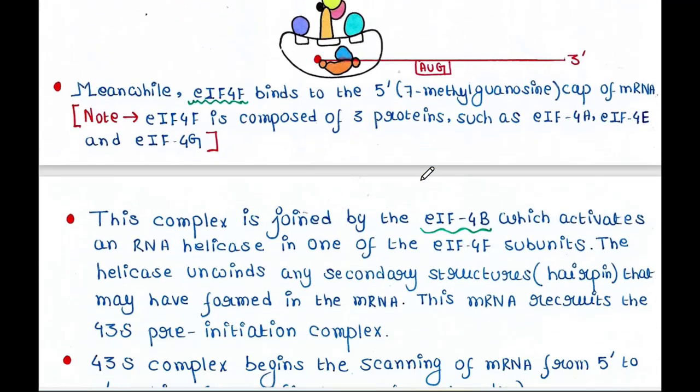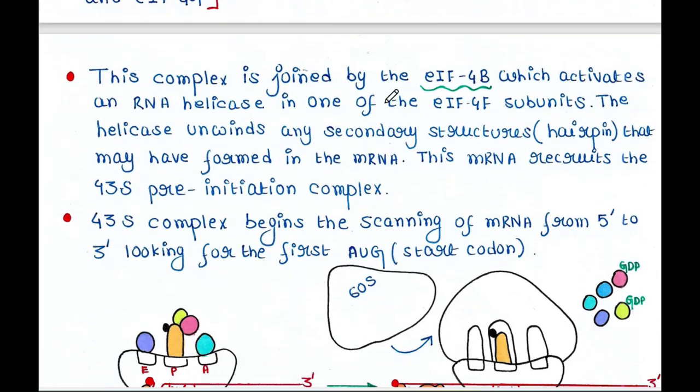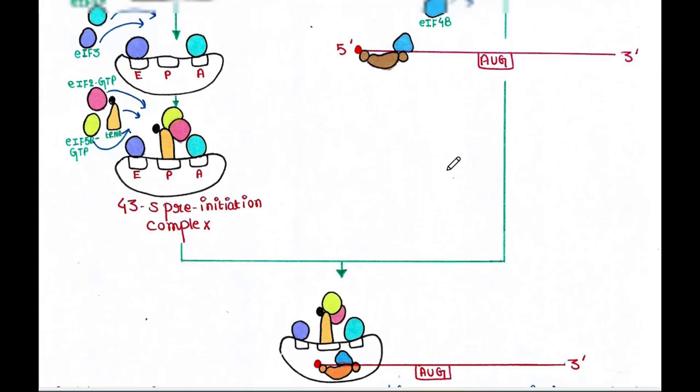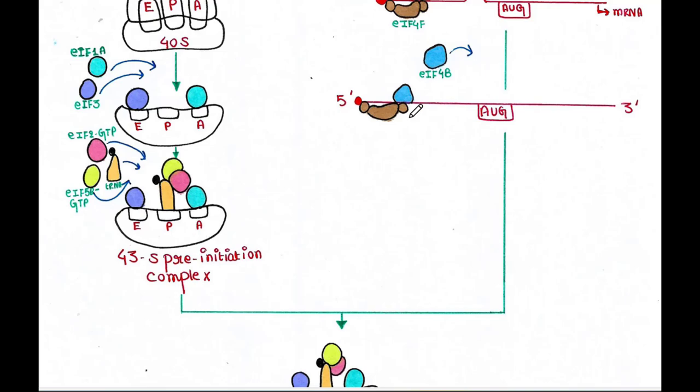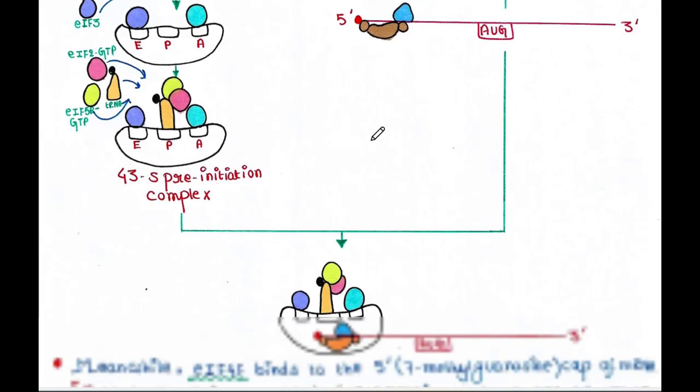Next step, this complex is joined by another initiation factor, that is eIF4B. So here, eIF4B will also come. So here we have eIF4F and eIF4B—all are there in the 5' end of mRNA.